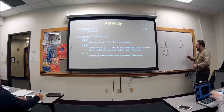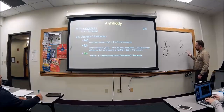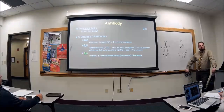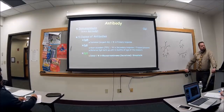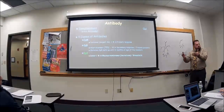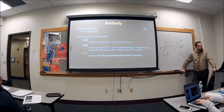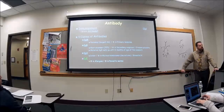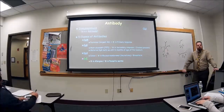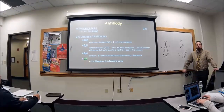We also have IgA, which is a dimer — it has two Y-shaped antibodies. IgA is found in the mucous membranes, like the GI tract and nasal passageway. It's also found in breast milk. After six months, the baby loses all its maternal IgG, so I encourage breastfeeding so that the baby can get the IgA until its immune system is built up. Then we have IgE, which is a monomer, and it increases during allergies and also during parasitic worm infections — just like eosinophils, which also go up during allergies and parasitic worms.